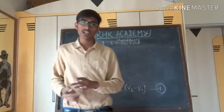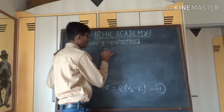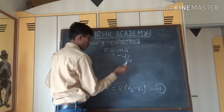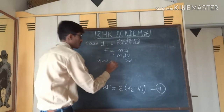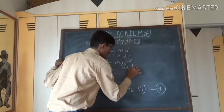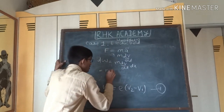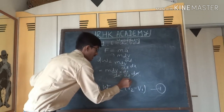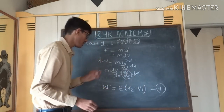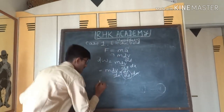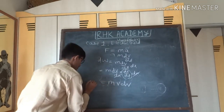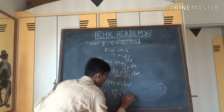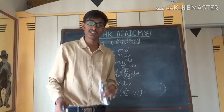Since the electron has point mass, we can also apply Newton's second law: F = ma = m(dv/dt). So work dW = m(dv/dt) dx. Applying the chain rule, this becomes m·v·dv = dW. Integrating both sides gives work done W = ½m(v₂² − v₁²), which is the change in kinetic energy of the electron.